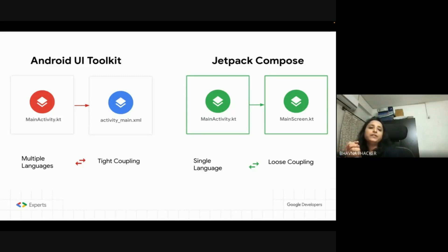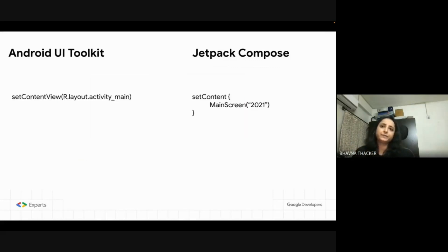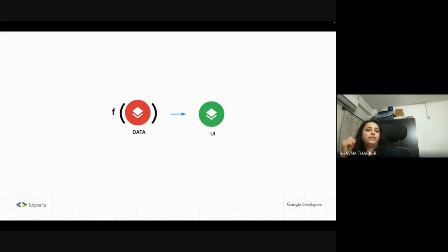If you've worked on an Android app, in the activity you say setContentView and pass the XML file for the layout. In Compose, how do you inflate the UI? We use the extension function setContent and pass it the composable function. The UI that you see on the screen is rendered by the composable function. So in Jetpack Compose, your UI is simply a function of data. That is why Jetpack Compose is said to follow declarative programming.